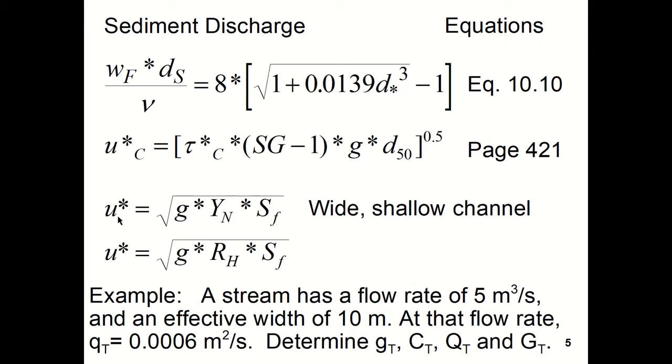The shear velocity is calculated as g times y sub n times s sub f for the wide shallow channel. And then if it's not wide and shallow, the hydraulic radius replaces the normal depth.